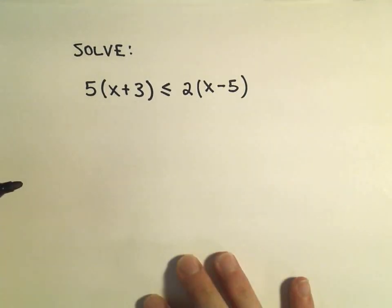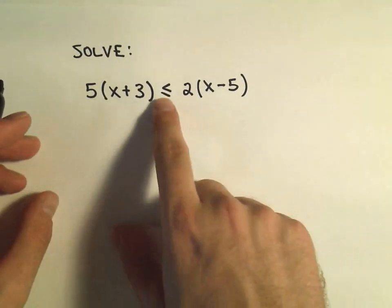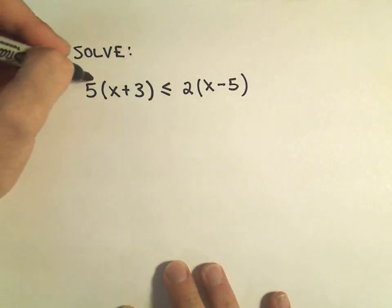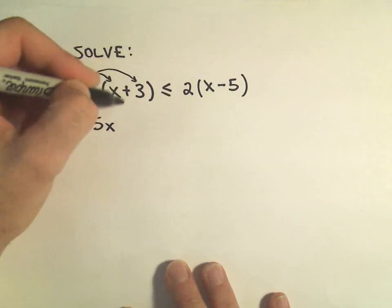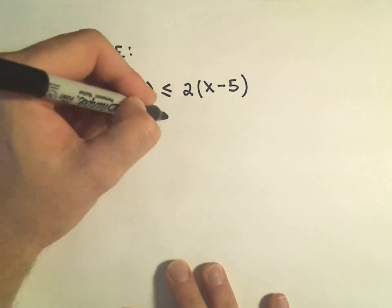So for now, all I'm going to do is, again, just kind of pretend this is an equation and solve it using my same technique. So I'm going to distribute the 5, so we would get 5 times x. 5 times 3 would be positive 15.